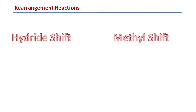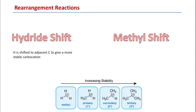The first type is the hydride shift, and the second type is a methyl shift. In hydride shift, hydrogen with a negative charge, or a hydride, is shifted to an adjacent carbon to give a more stable carbocation. We know that tertiary carbocation is more stable than secondary carbocation, which is more stable than primary carbocation.